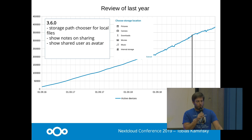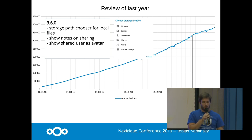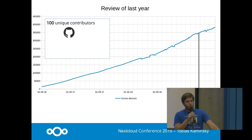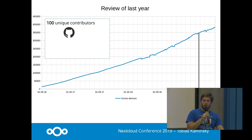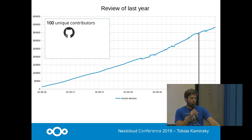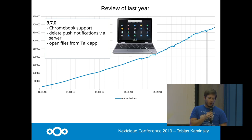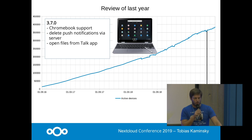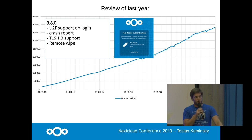Version 3.6.0 introduced a new storage path chooser for local files — you can jump directly to your pictures, camera, movies, or music folders. You can also show notes when sharing a file. A big milestone in June: we had 100 unique active contributors on GitHub, making it truly a community-driven project. The last release was 3.7.0 with Chromebook support, and today we released 3.8.0 with UTF support and remote wipe for Nextcloud 17.